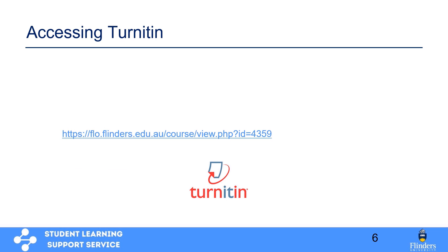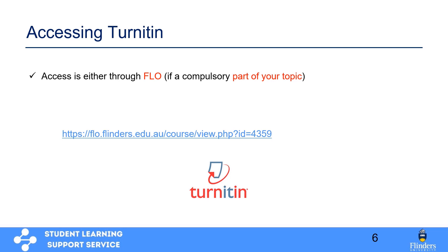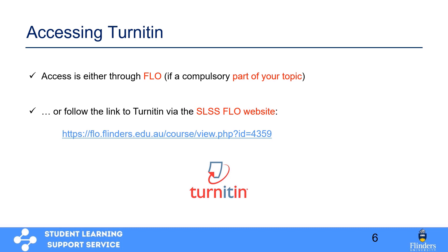There are various ways you can access Turnitin. First of all, it is basically in your topic on Flow. You should use that if you are supposed to do text matching using Turnitin and submit your work through Turnitin before final submission of your assignments. The other way is to use the Turnitin link in the SLSS Flow website, and that's the link which you can find on this particular page.